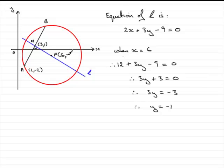So I might as well write that in there, that p has coordinates 6 minus 1.